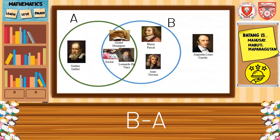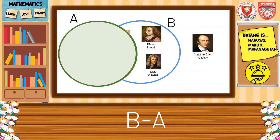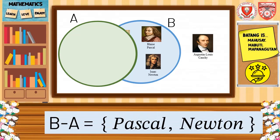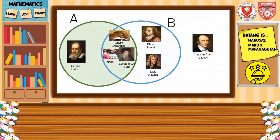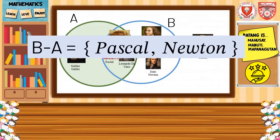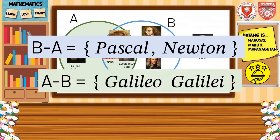For B minus A, we're going to remove all the elements in A. Then the remaining elements in B should be the answer. So the remaining elements in B are Pascal and Newton. You have noticed that B minus A equals Pascal and Newton, while A minus B equals Galileo Galilei.